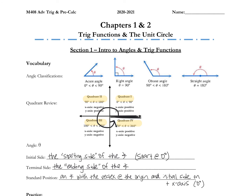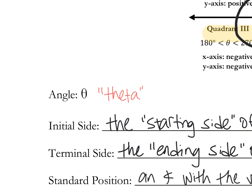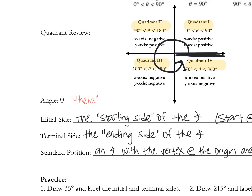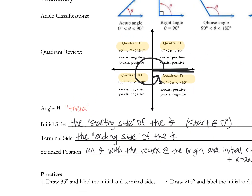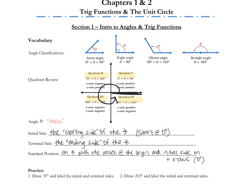We have a symbol we always use for an angle — it is a Greek symbol, actually pronounced theta. We use theta instead of x, y, a, or b, just because — so just get used to seeing that. You'll notice that all of these angles use that symbol; they're called theta.